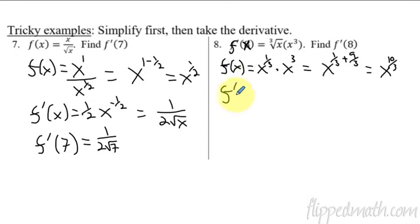Alright, so now the derivative. f prime of x is going to equal 10 thirds. Now it becomes the coefficient. x to the, subtract 1, but remember 1 is 3 thirds, so that's going to become 7 thirds. That's the derivative. So now we plug in an 8. f prime of 8. What does that equal? That's going to be 10 thirds. Okay, now watch what I'm going to do here. 7th root. Oops, fix that. The cube root. That's a 3 on bottom. Alright, now here's where kids mess up.